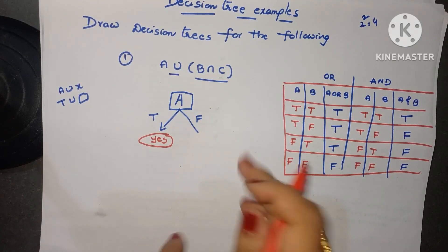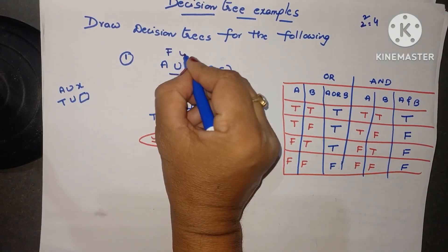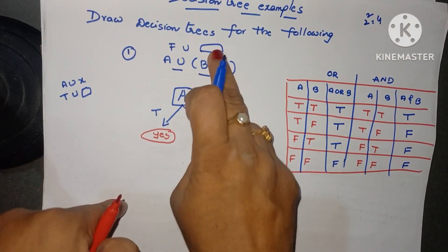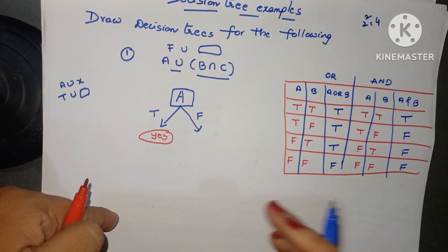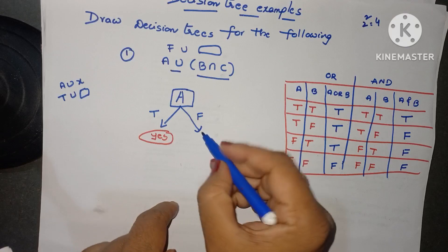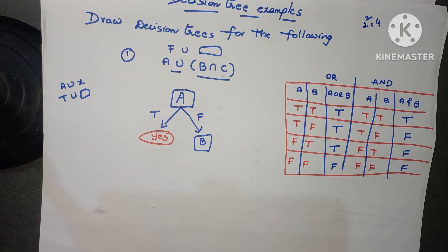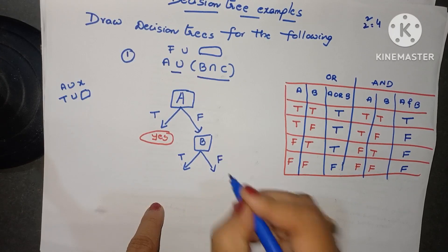Then we go for the false case. If A is false — false OR whatever X is — here both could be false, so there is a problem; we do not know if the result is true or false. So now we go for B intersection C. We go to node B — this also depends on the B value, so we have to take another decision. Decision nodes are kept in square or rectangle boxes. B is also either true or false.